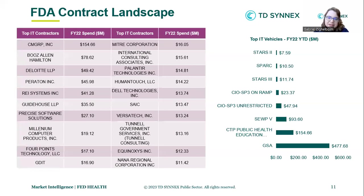This slide presents the leading IT contractors along with the primary contracting vehicles used by the FDA, similar to the HHS contract landscape slide shown earlier. I will include this information in our look at the other agencies as well. Since we're pressed for time, I'll proceed without diving into the details here. However, you can refer to these slides later to identify the largest potential partners in each agency and preferred procurement vehicles on your own, should you wish to.